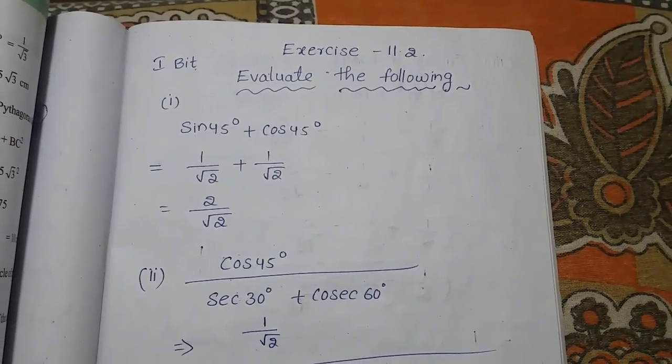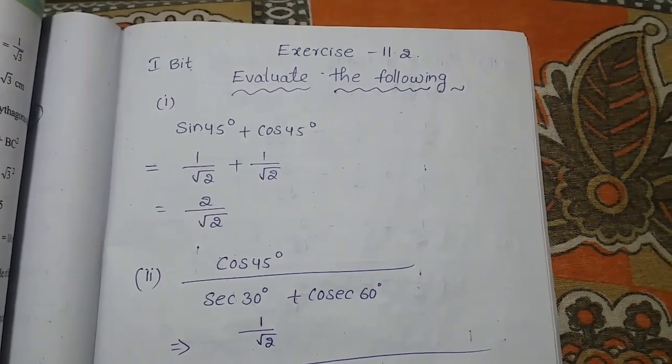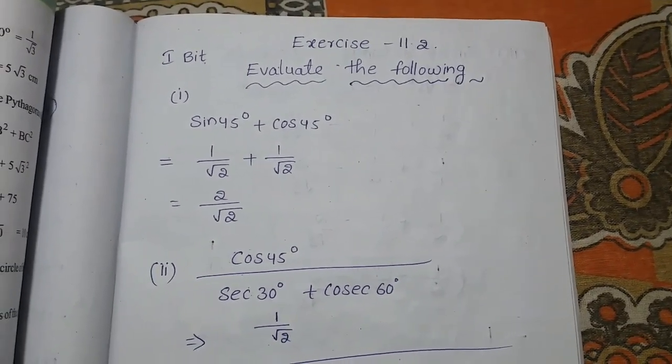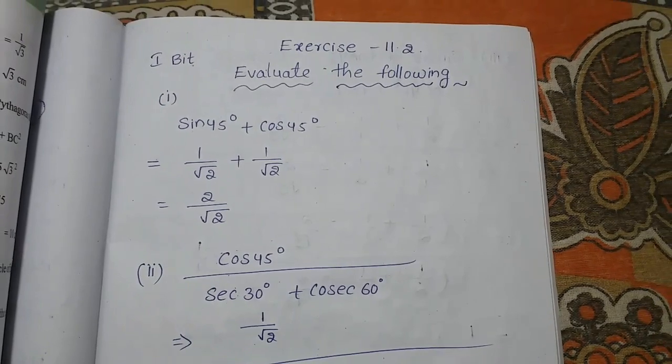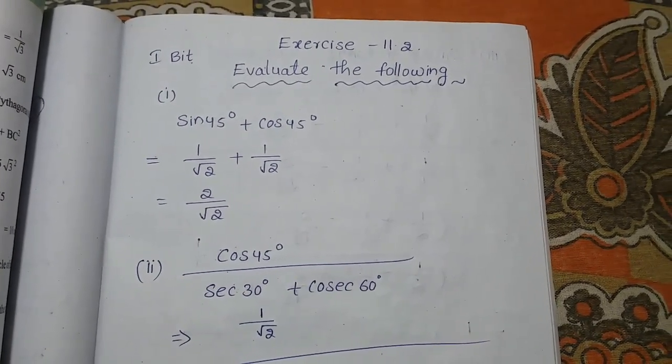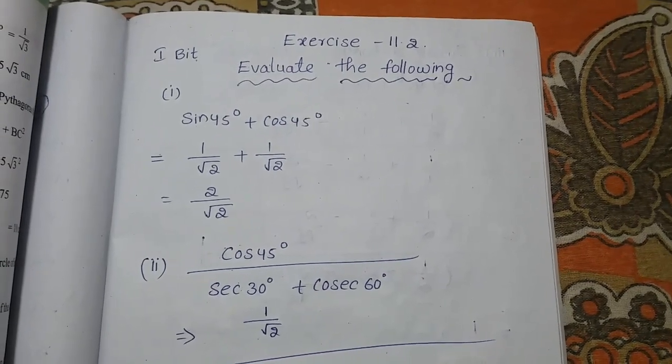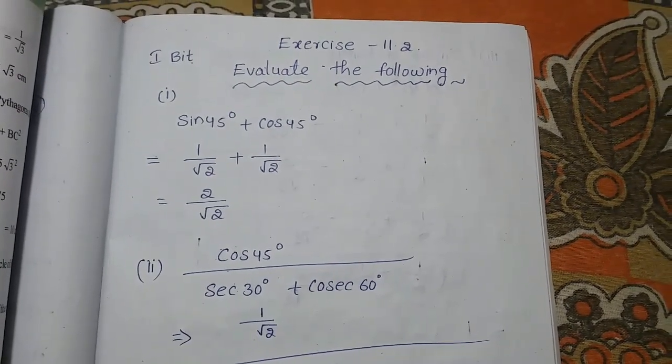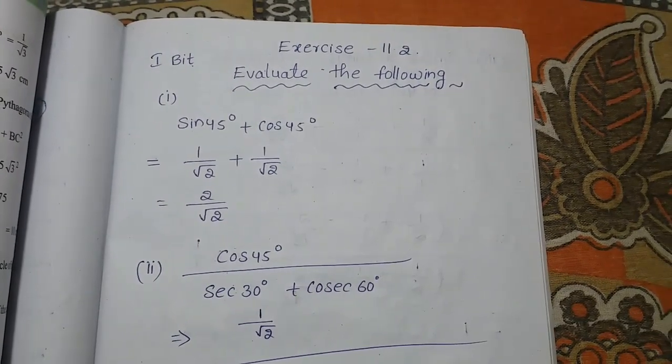Here is the first question, that is sin 45° plus cos 45°. We know that sin 45° value is 1 by root 2 from the table and cos 45° also 1 by root 2 from the table. 1 by root 2 plus 1 by root 2, both having the same denominator.